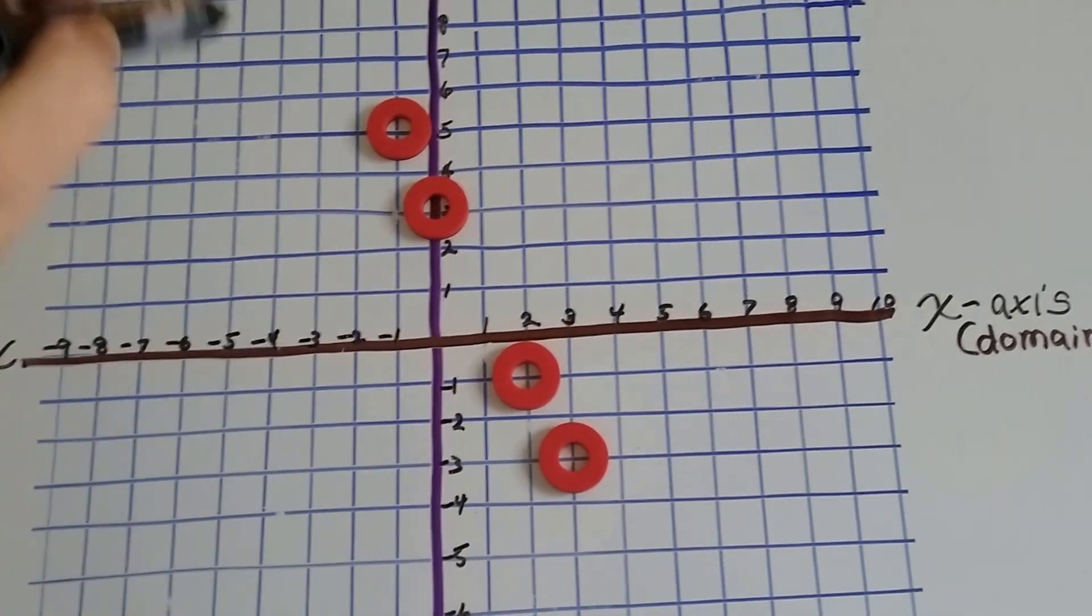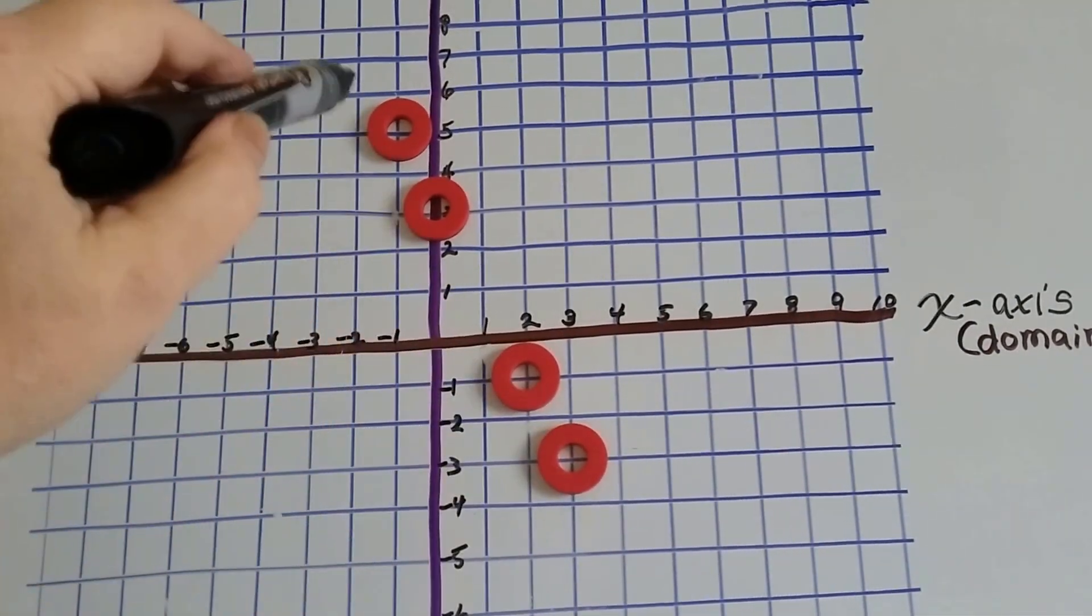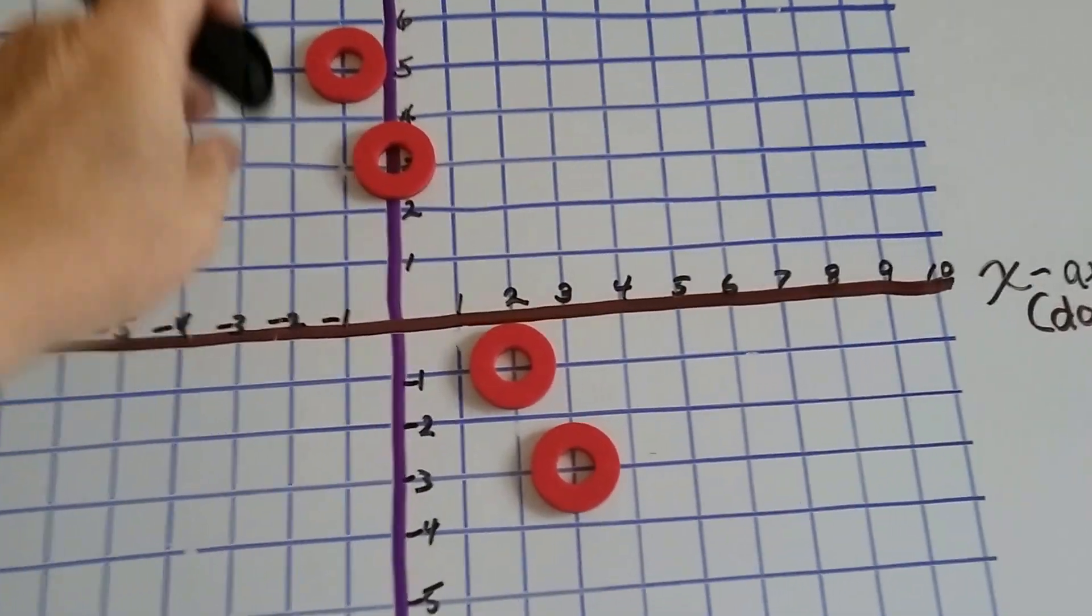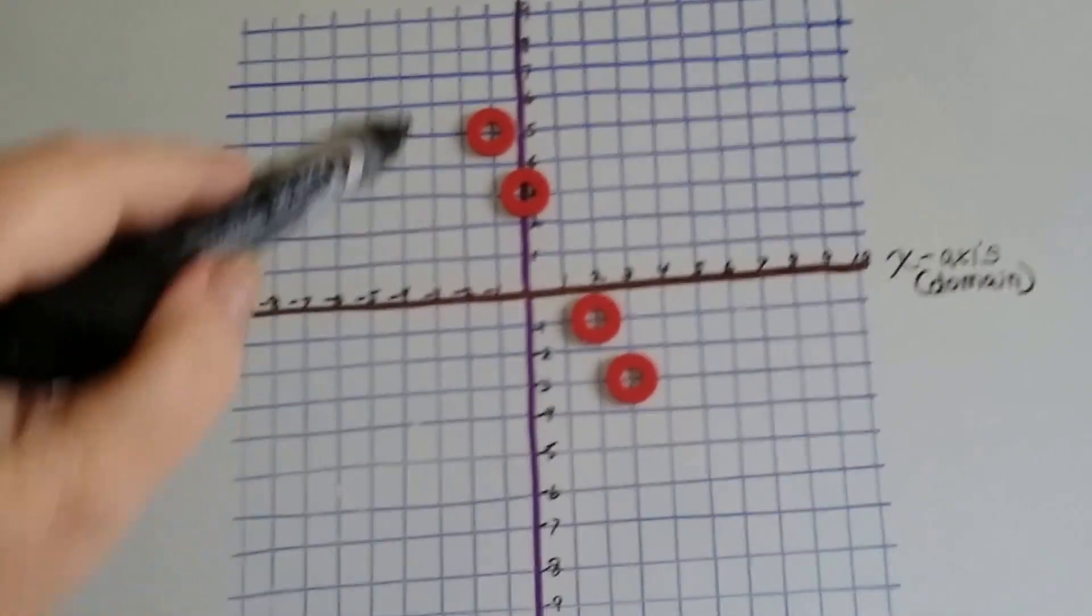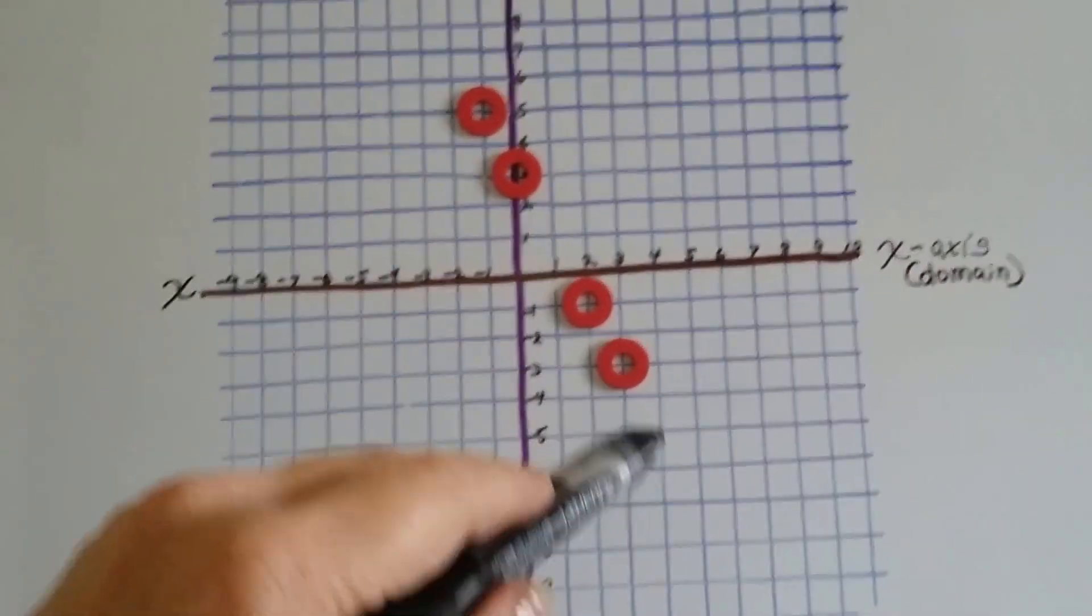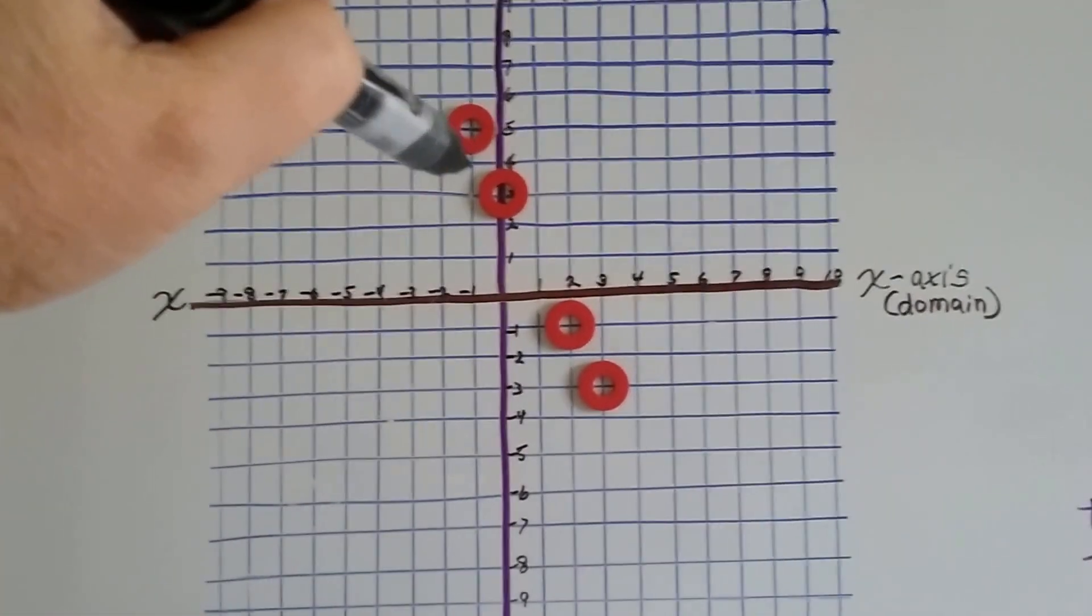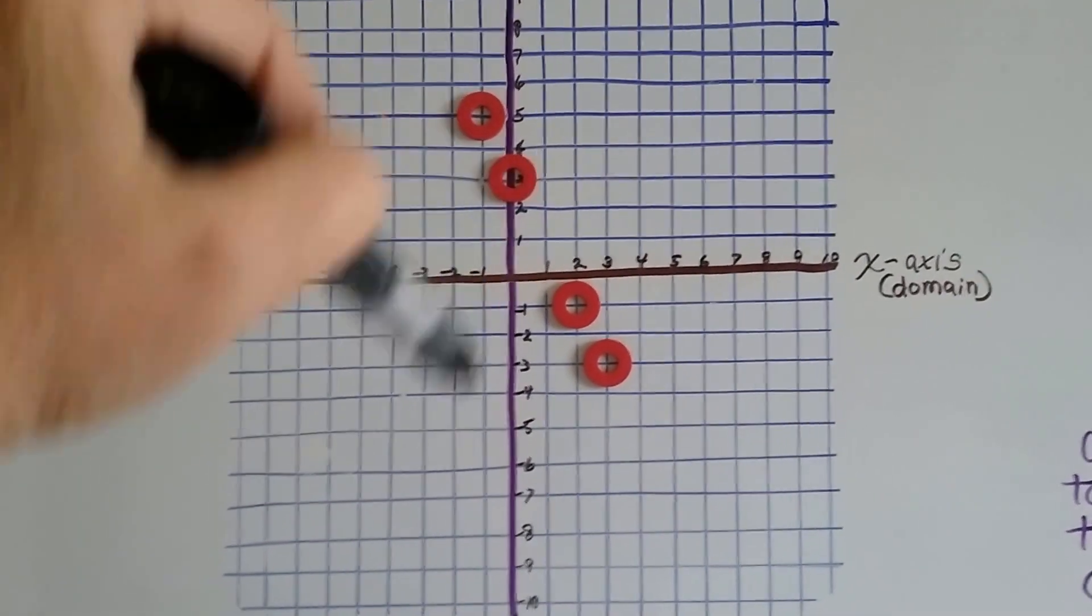So can you see the line that's being made? I know my graph isn't exactly perfect, but we can see a line that's forming, right? And can you see the intersection that it would have gone through? It would have gone through 1, 1.